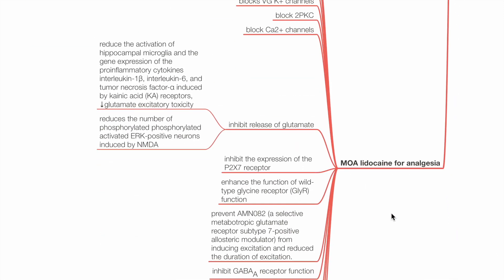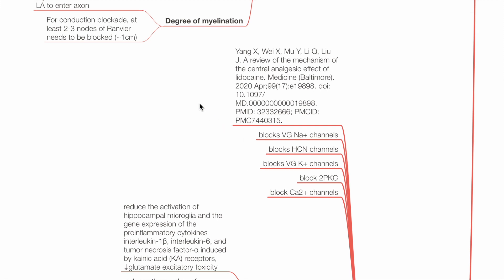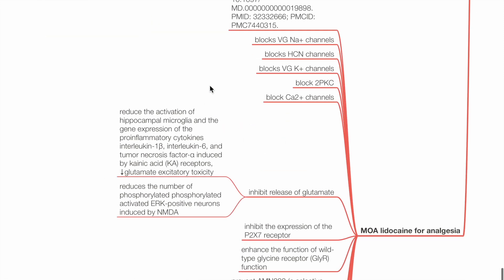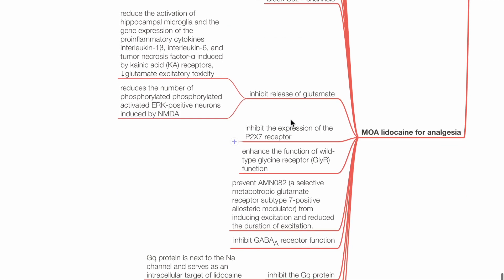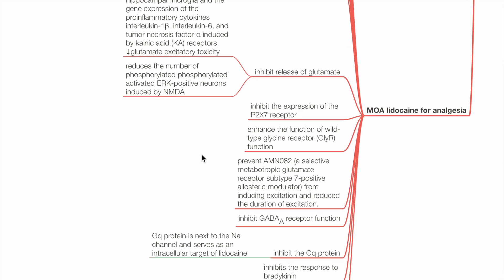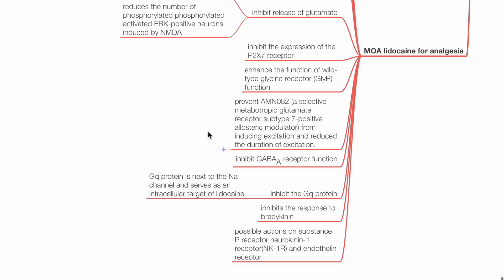Mechanism of action of lidocaine for analgesia, based on the article by Yang X et al., 2020: includes blockade of VGNAC, blockade of HCN channels, blockade of voltage-gated potassium and calcium channels, blockade of two-pore potassium channels, inhibition of release of glutamate and their effects, inhibition of expression of P2X7 receptor, enhancement of glycine receptor function, prevention of AMN082 (a glutamate receptor allosteric modulator), inhibition of GABA-A receptor, inhibition of Gq protein, inhibition of response to bradykinin, and possible actions on substance P receptor, neurokinin-1 receptor, and endothelin receptor.